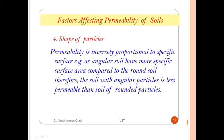The fourth factor is shape of particles. Permeability is inversely proportional to the specific surface. For example, angular soil particles have a greater specific surface area compared to rounded particles; therefore, soil with angular particles is less permeable than soil with rounded particles.